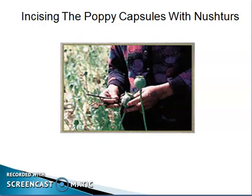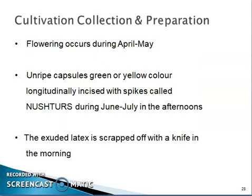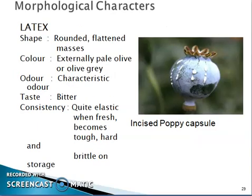The poppy capsule is incised with nesters. Flowering occurs during April to May. Unripe capsules, green or yellow in color, are longitudinally incised with spikes called nesters during June to July in the afternoons. The exudate latex is then scraped off with a knife in the morning. Here you can see the incised poppy capsule.